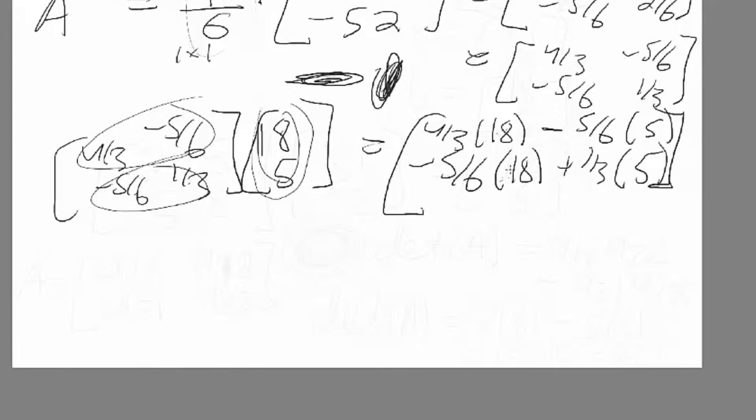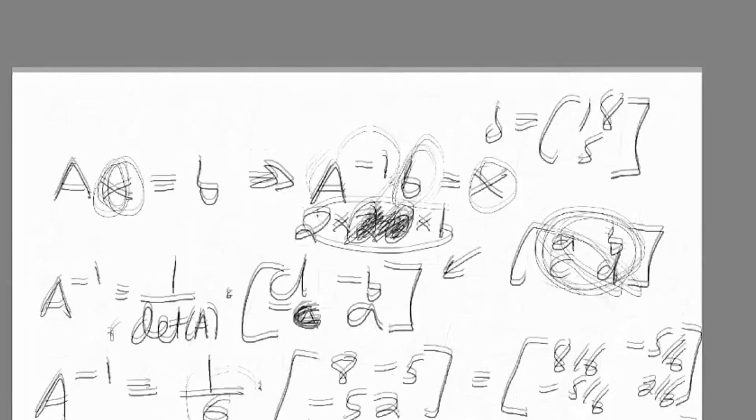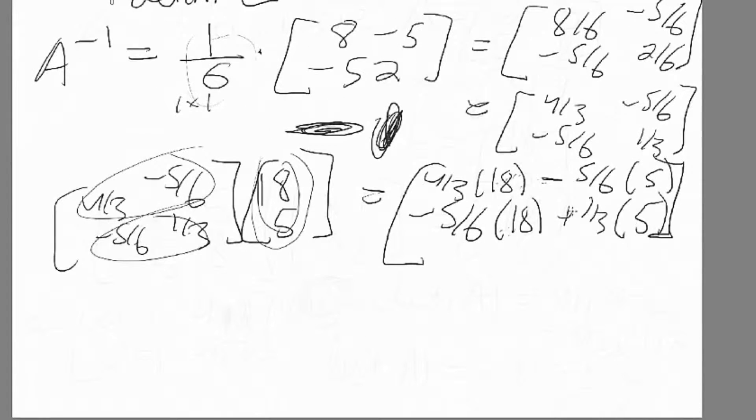You'll have a column matrix with two elements in it. The first element will be that x1 that we used earlier, and the next one will be x2. These are the two variables we're trying to solve. Or if you don't like the notation x1, x2, you can say the top one is x and the bottom one is y. Then we can plug this into a calculator and solve it pretty easily.